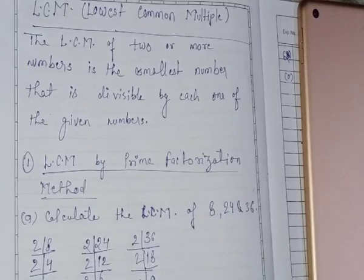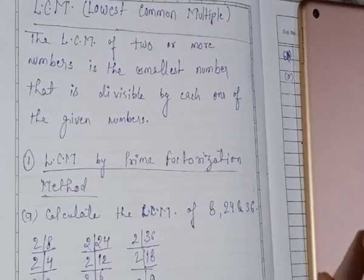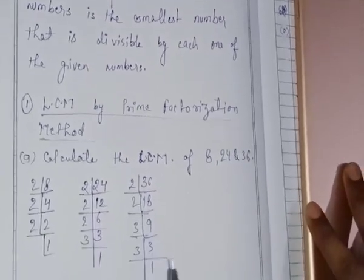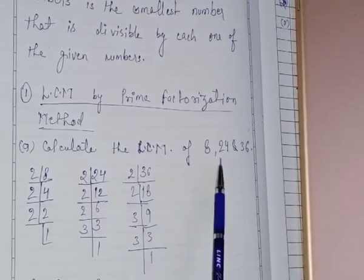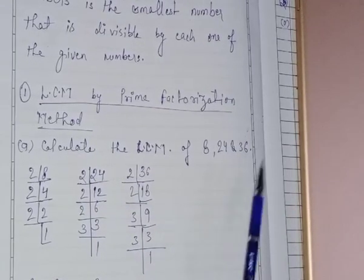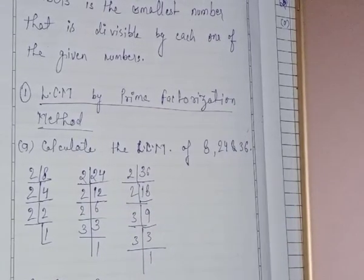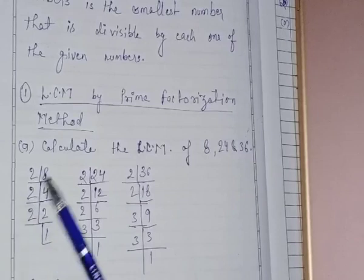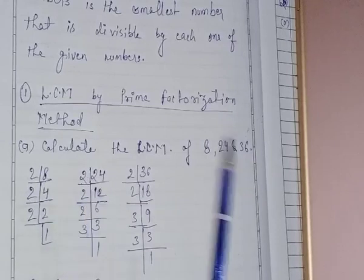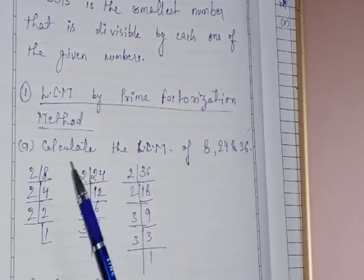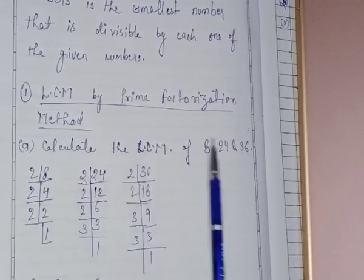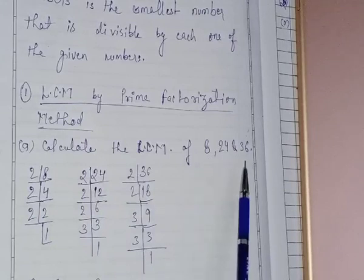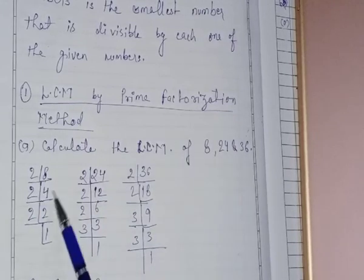Now, what is this method? If I say calculate the LCM of 8, 24 and 36, so what we will do — first of all, we will take the prime factorization of all the three numbers individually.